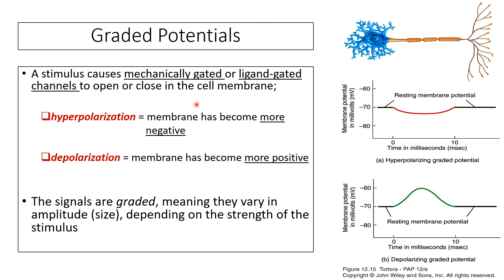If a stimulus causes mechanically-gated or ligand-gated channels to open and the inside of the cell becomes more positive, this is known as depolarization — becoming less polarized, moving closer toward zero millivolts. These signals are graded, meaning the strength of the stimulus the neuron receives determines the amplitude and size of the potential. The larger the stimulus, the greater the effect on the resting membrane potential.